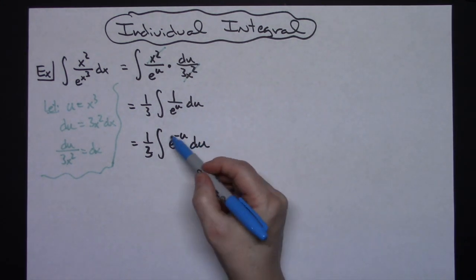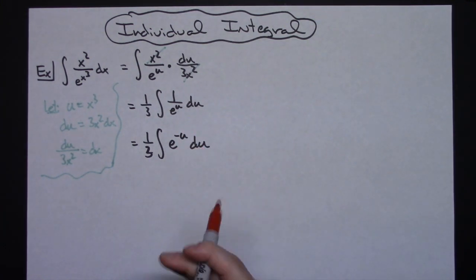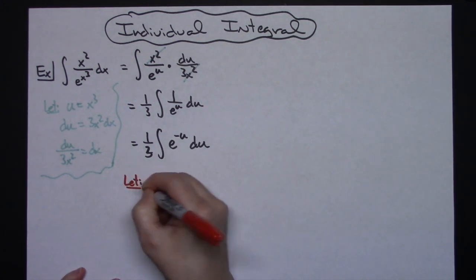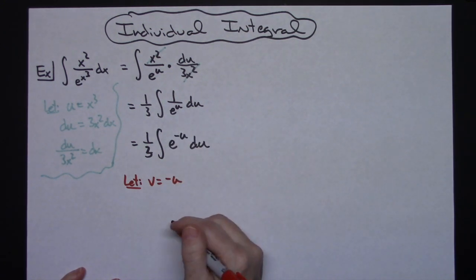Now right here I cannot integrate e to the negative u, so I'm going to need to do another u substitution, but I already used u so I'm going to pick another letter. I'm going to pick v because we just need to pick something else here. So v is going to equal negative u right there.